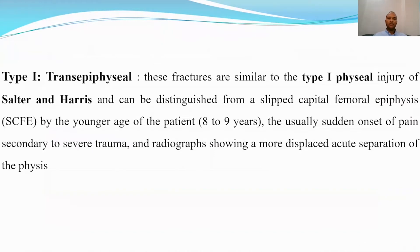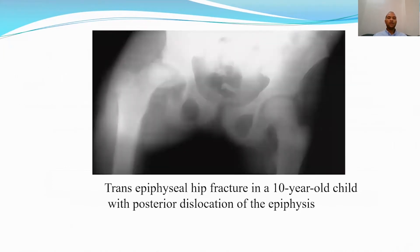Type 1 is a transphyseal injury similar to Salter-Harris type 1. We should differentiate this type from slipped capital femoral epiphysis (SCFE) in chronic cases. Differentiation points: it usually occurs in a younger age group below 9 years old, with a history of sudden onset severe pain and severe trauma. On X-ray there is more displacement or acute separation of the physis. This X-ray shows a 10-year-old child with a transphyseal fracture and posterior dislocation of the epiphysis.